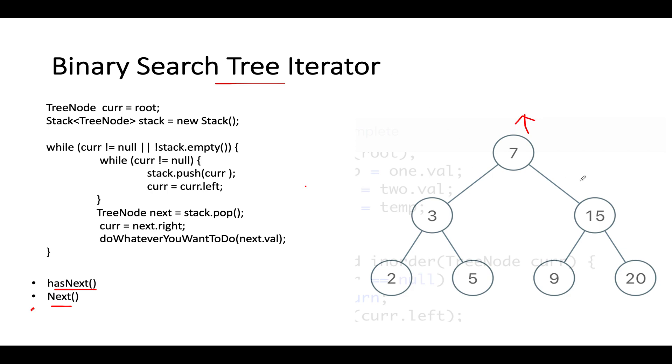The most naive approach that comes to everybody's mind is to iterate over this binary search tree in order fashion, by in order I mean left, root and right. Once we do that, we will store the entire tree in an array format and what will be the output of this? It will be 2, 3, 5, 7, 9, 15, 20.